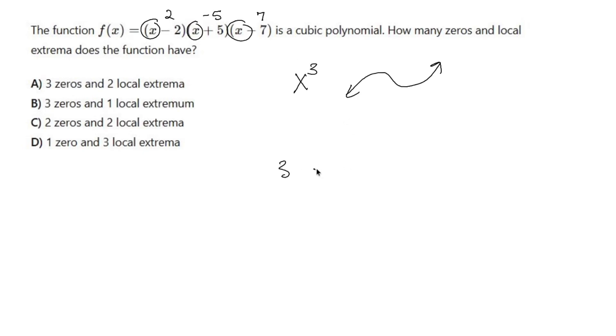So it has three zeros, and if it's a regular old cubic with no weird multiplicity, nothing crazy like that, we're going to have two local extrema, a local maximum and a local minimum.